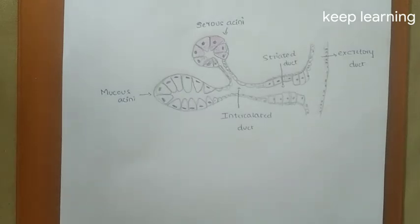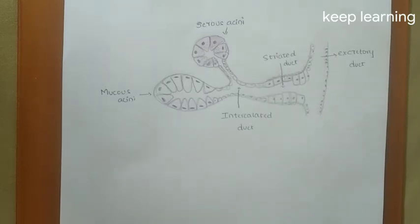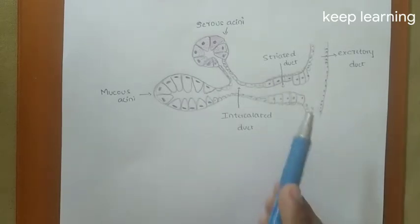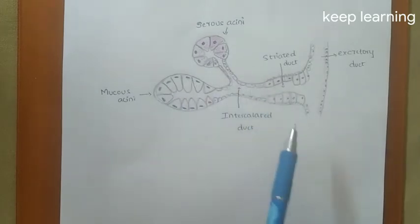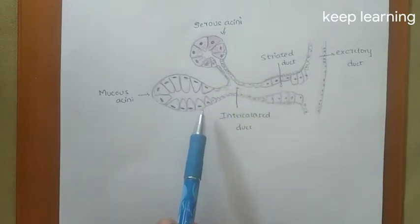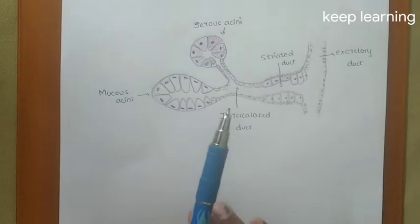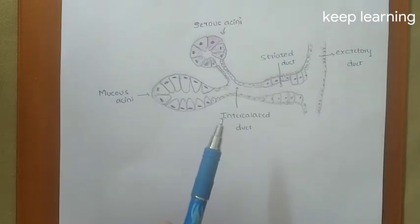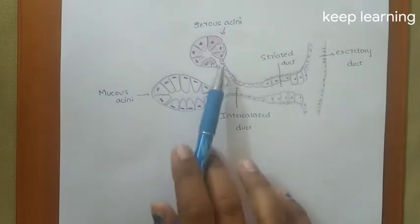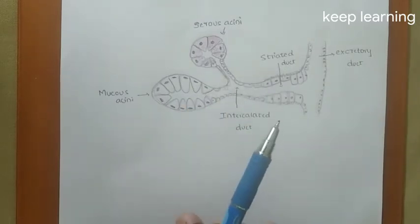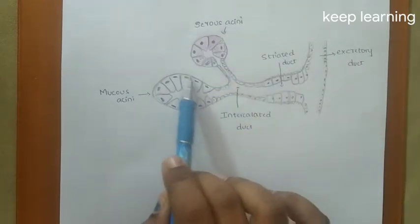Hello everyone, thanks for clicking. This video is about the difference between the serous and the mucous acini — where these cells are present, how they work, their functions, and the differences between them. We can see here in the picture a salivary gland containing serous acini and mucous acini — in the case of a mixed gland, that is the submandibular gland, whereas the parotid is a pure serous gland and the sublingual is a mucous gland.